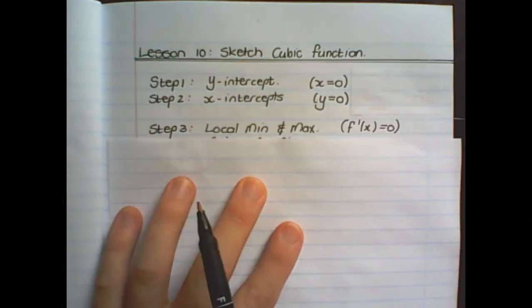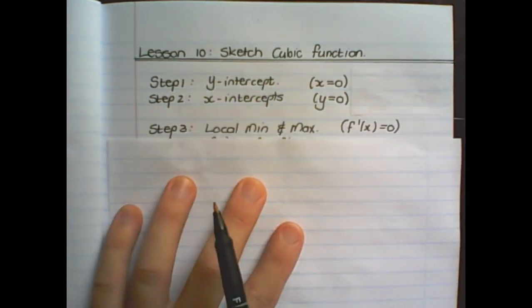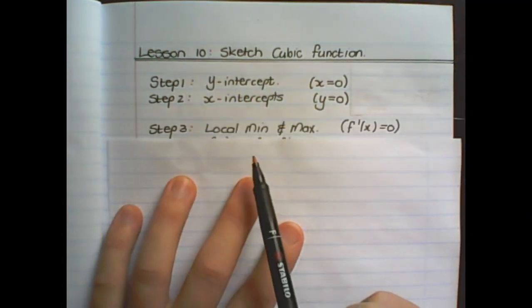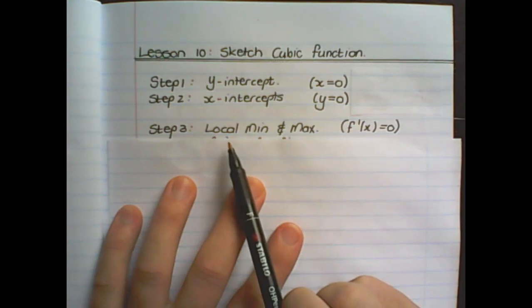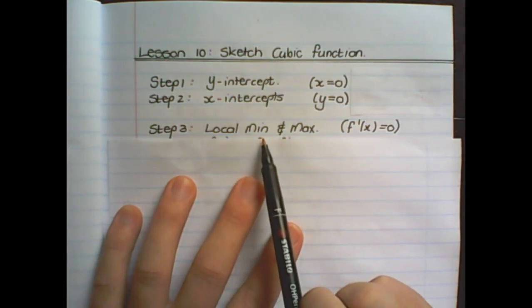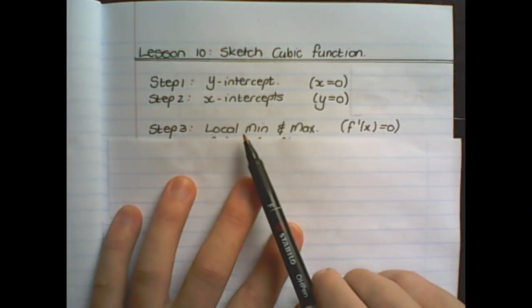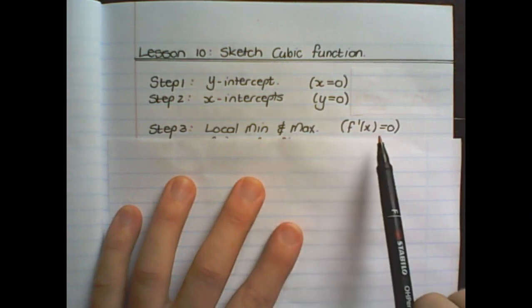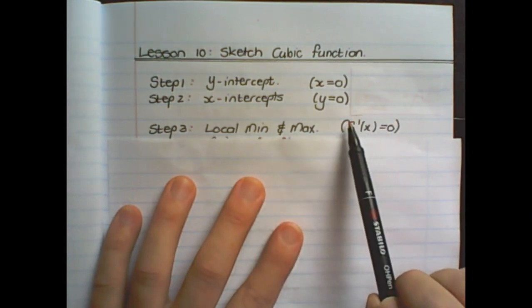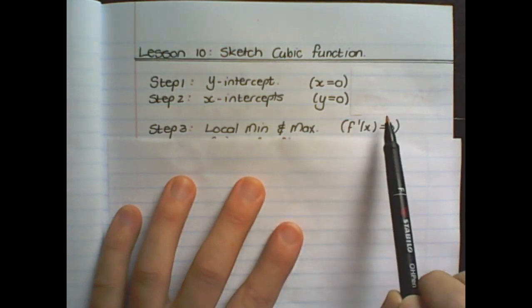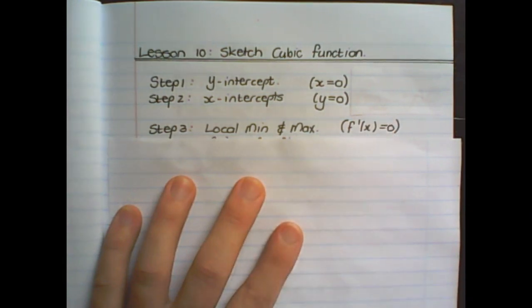Step three is to find the local minimum and local maximum points. Remember, at the local minimum and local maximum the derivative — or the gradient — is equal to zero.